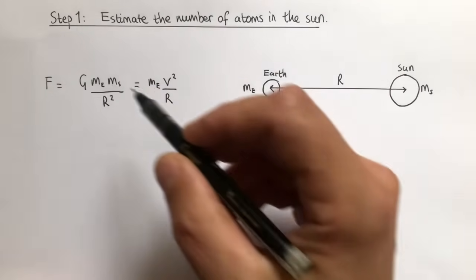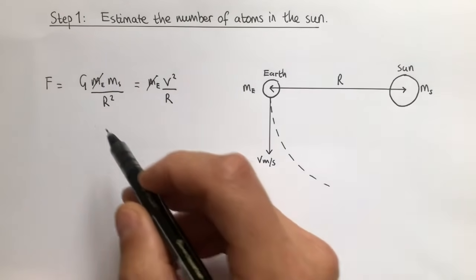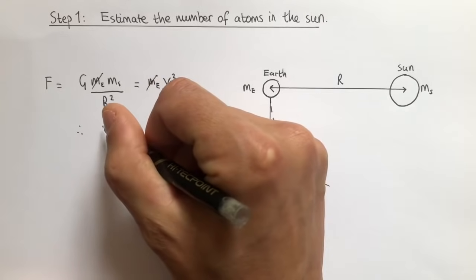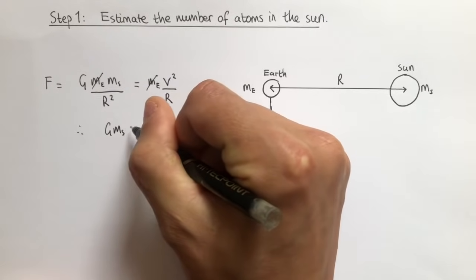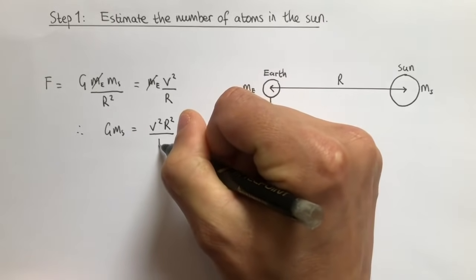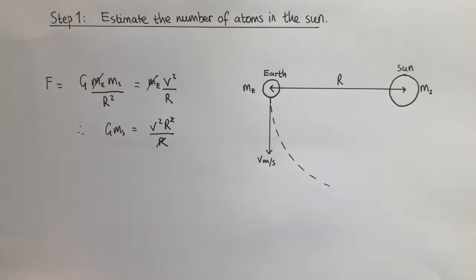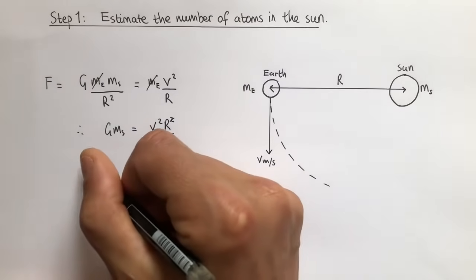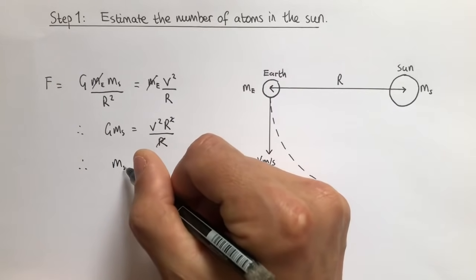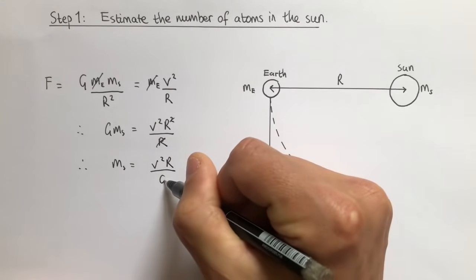Firstly, we notice that ME cancels from both sides, and if we multiply both sides by R squared, we get G·MS equals V squared·R squared divided by R, and the R's cancel, leaving one R on top. If we divide both sides by G, we find MS equals V squared·R divided by G.